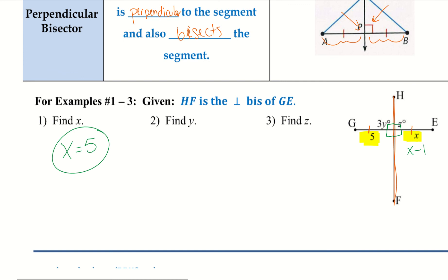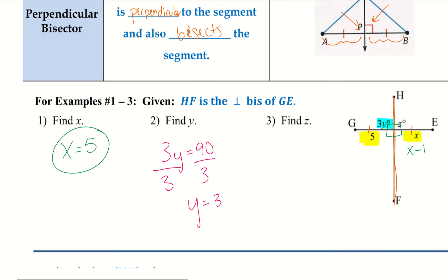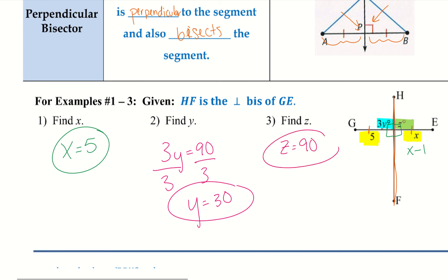Of course, if we had something like X minus one, I would do X minus one equals five and then solve for X. Next is Y — that angle is 90 degrees, so I set 3Y equal to 90 degrees, divide by three, and Y equals 30. And then finding Z, which is also 90 degrees, so Z equals 90. If I had something like Z plus 10, I would solve for Z appropriately.